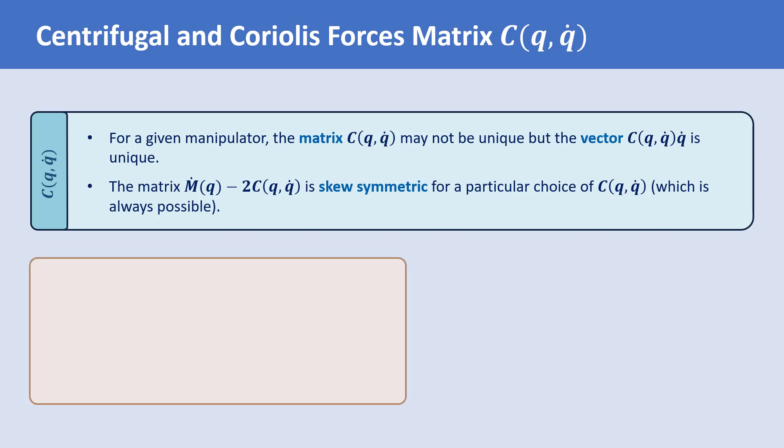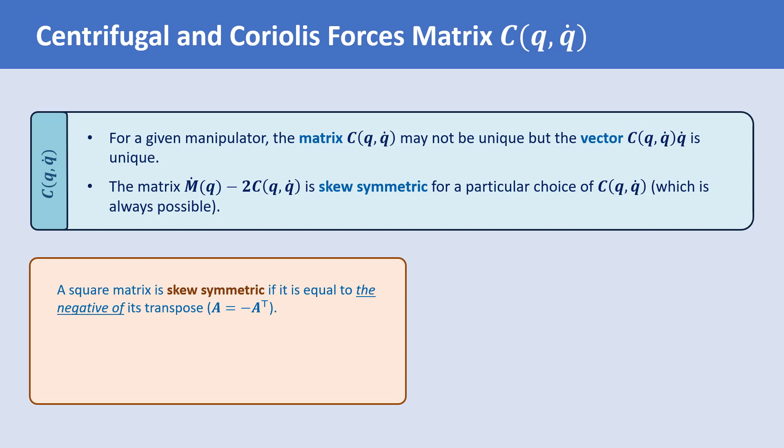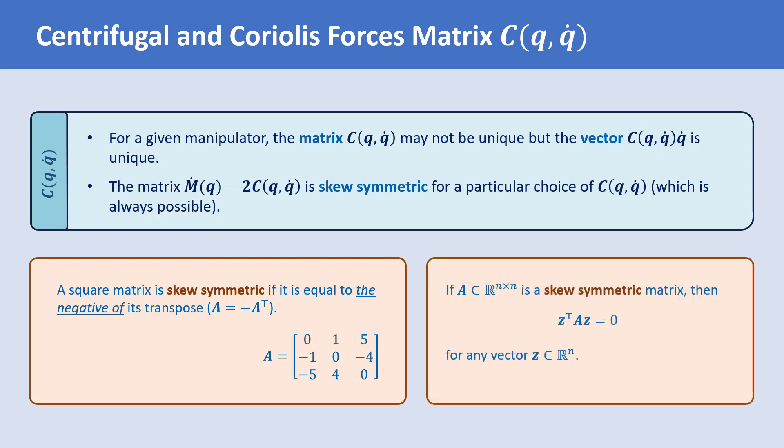A square matrix is skew symmetric if it is equal to the negative of its transpose. For example, matrix A shown here is a 3 by 3 skew symmetric matrix. Notice that the diagonal entries of a skew symmetric matrix are always zero. If a matrix A is skew symmetric, then Zᵀ A Z = 0 for any vector Z. This can be proved using the definition of skew symmetric matrices.